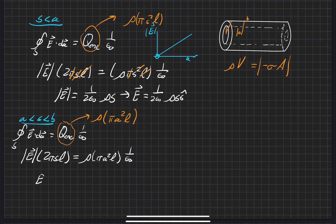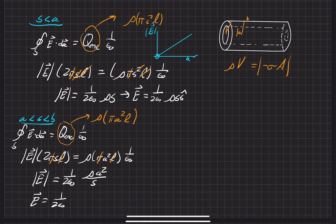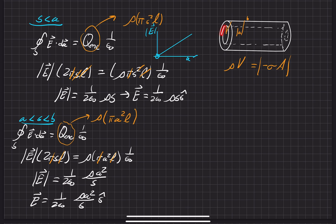Solving for the electric field magnitude, the π's and L's cancel again. We're left with E = ρa² / (2ε₀s). The a² survives as a constant while s is the variable. Including direction, the full answer is E = ρa²/(2ε₀s) ŝ. That is the electric field in the empty region between the inner cylinder and the outer cylindrical shell.